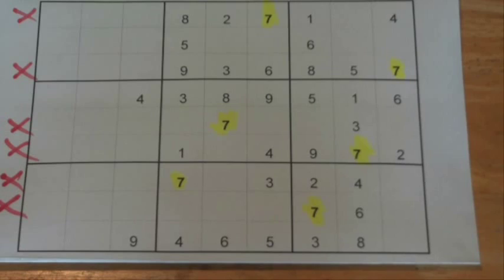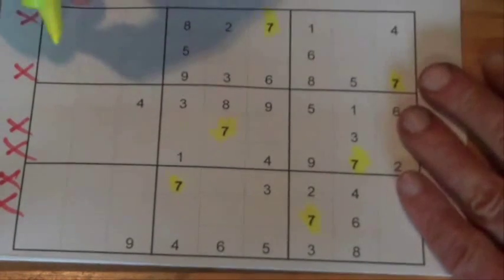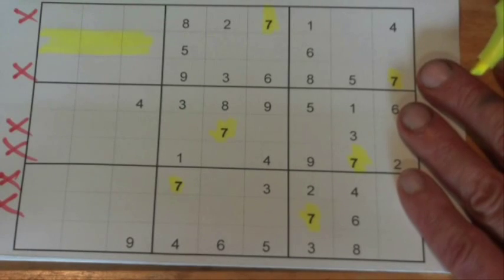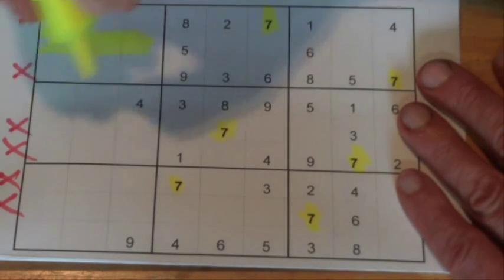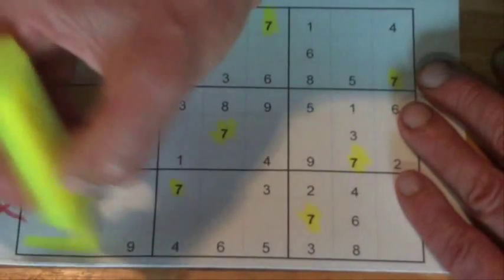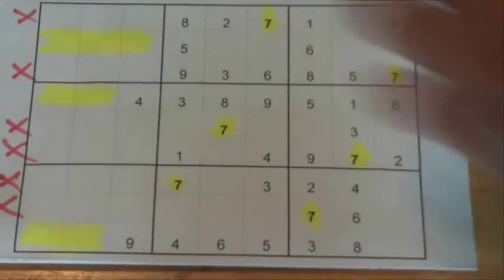So we're left with three rows that don't have a 7 in it. And we've got one there, and we've got two boxes there, and two boxes there.